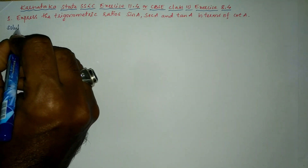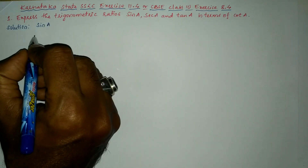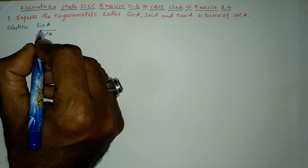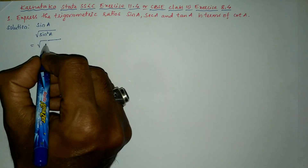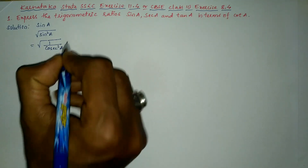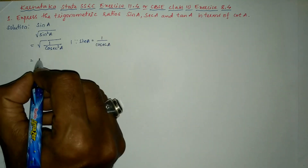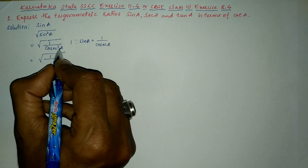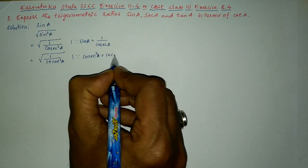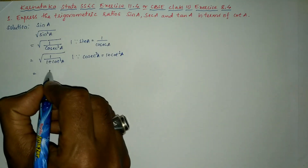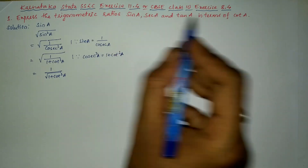Now let us find the solution for the given problem. We will write sin a, which can also be written as square root of sin square a, since the square and square root cancel. Square root of sin square a can also be written as square root of 1 divided by cosec square a, because sin a equals 1 divided by cosec a. Using the identity cosec square a equals 1 plus cot square a, this becomes 1 divided by square root of 1 plus cot square a. Hence we have converted sin a in terms of cot a.